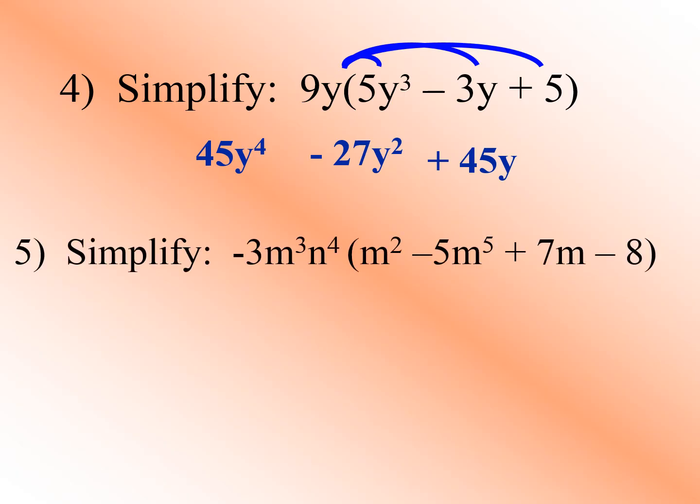Proceed to example number 5. We have negative 3m³n⁴ times the quantity (m² minus 5m⁵ plus 7m minus 8). First, distribute to m²: since m² has no coefficient, just copy negative 3, copy variable m, add exponents 3 plus 2 to get 5. Since m² has no variable n, just copy n⁴. So the answer is negative 3m⁵n⁴.